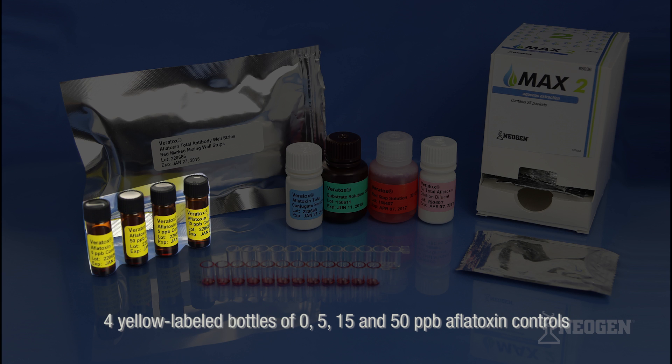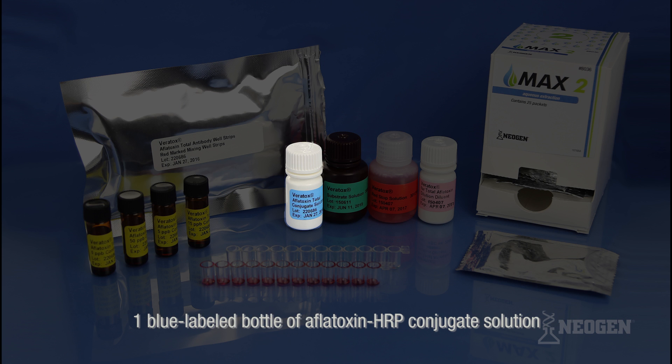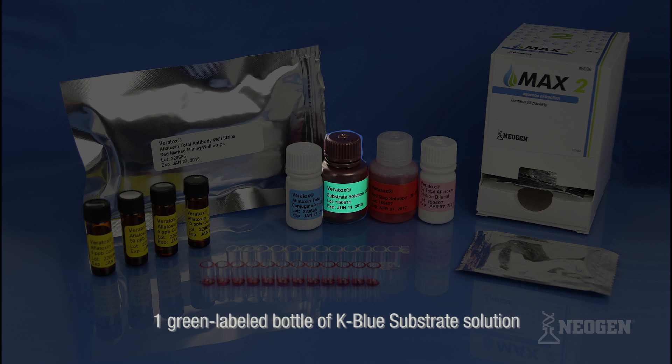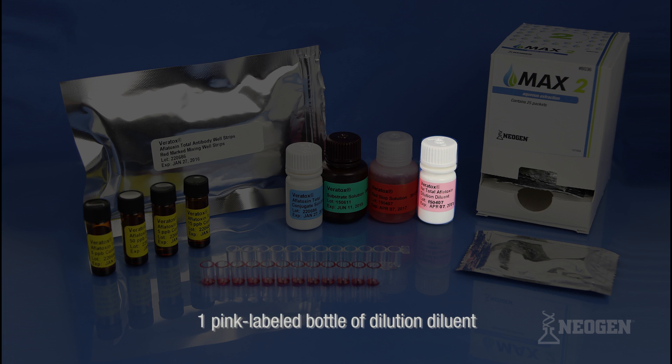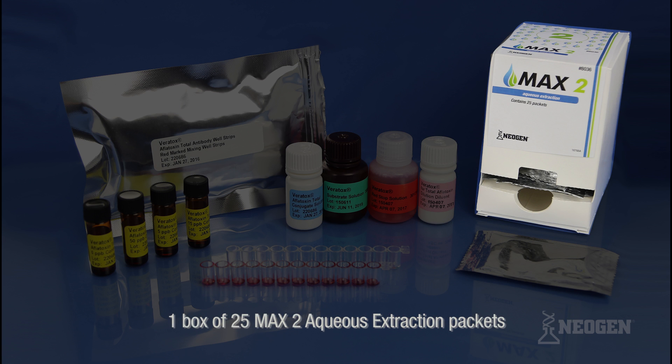4 yellow labeled bottles of 0, 5, 15, and 50 ppb aflatoxin controls, 1 blue labeled bottle of aflatoxin HRP conjugate solution, 1 green labeled bottle of K blue substrate solution, 1 red labeled bottle of red stop solution, 1 pink labeled bottle of dilution diluent, and 1 box of 25 Max 2 aqueous extraction packets.